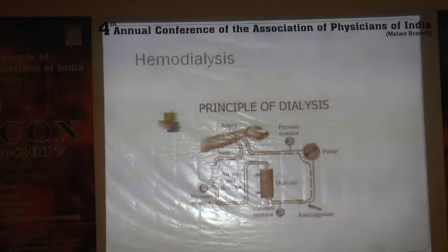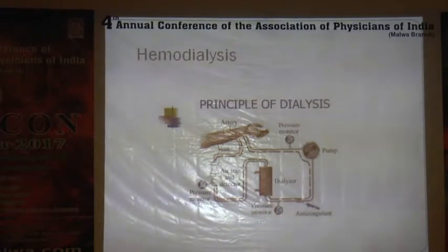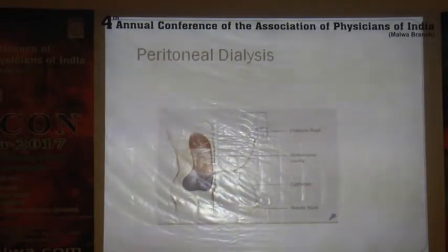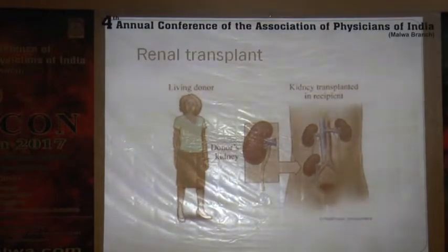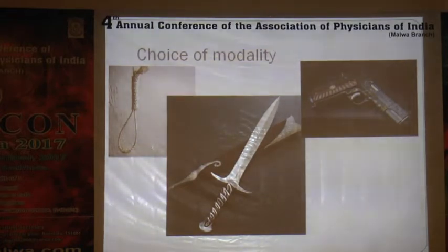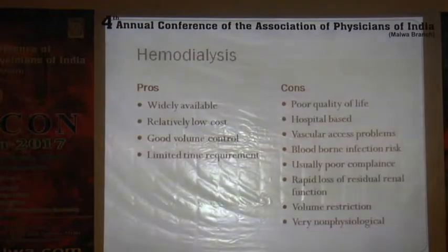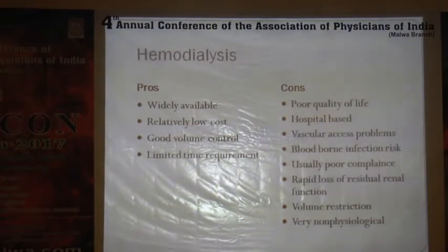Modalities of dialysis: hemodialysis requires an AV fistula and a dialysis machine. Peritoneal dialysis is a simple process that does not require special equipment, can be done at home, and involves fluid exchange through the peritoneal cavity. Renal transplant involves placing a donor kidney attached to the iliac vessels. The choice of modality is — as one might put it — like choosing how you want to die. Pros of hemodialysis: widely available, costs around 15,000–20,000 rupees a month, good volume control, limited time expenditure. Cons: poor quality of life, hospital-based, vascular access problems, blood-borne infections, poor compliance, and rapid loss of residual renal function.